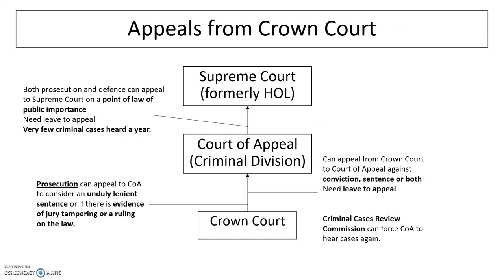In terms of appeals from the Crown Court, the hierarchy runs: Crown Court, Court of Appeal Criminal Division, and the Supreme Court. You need leave to appeal at all stages, and you can appeal against your conviction, sentence, or both. The prosecution can appeal to the Court of Appeal to consider an unduly lenient sentence, or if there is evidence of jury tampering, or a ruling on the law. The Criminal Cases Review Commission can also force the Court of Appeal to hear cases again where they think there's been a miscarriage of justice. Both prosecution and defence can appeal to the Supreme Court on a point of law of public importance — again requiring leave — but bear in mind that very few criminal cases are heard each year by the Supreme Court, as they tend to be predominantly civil cases.